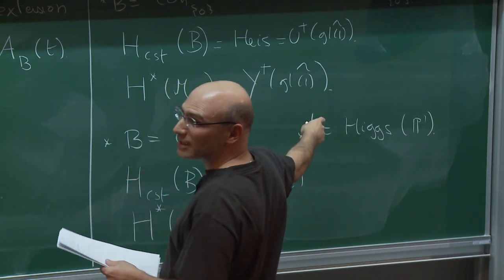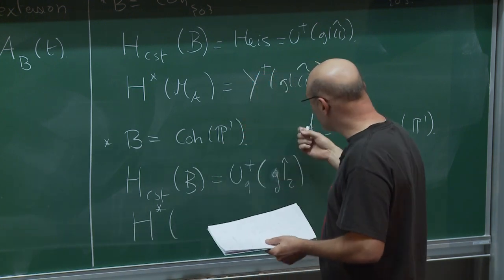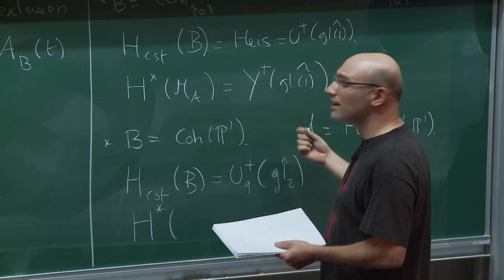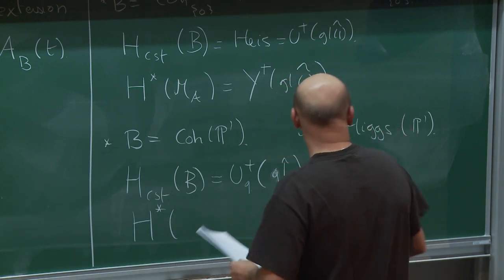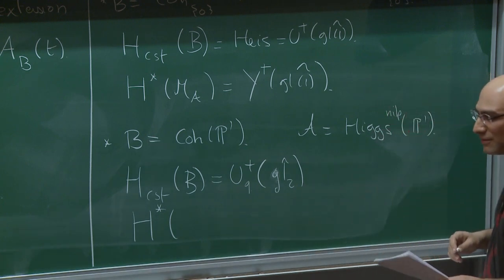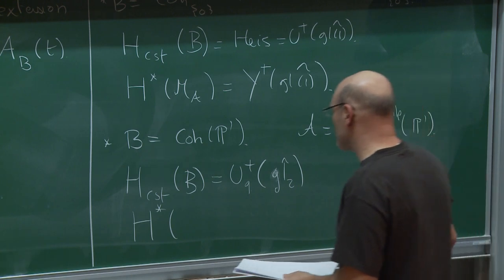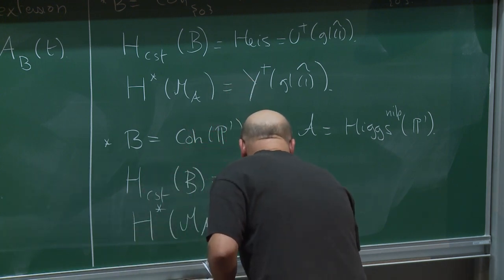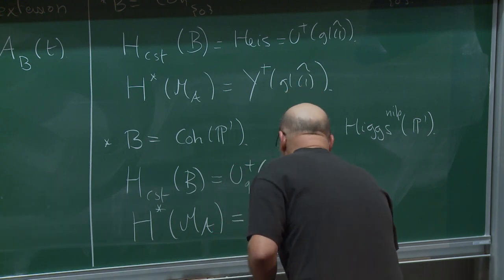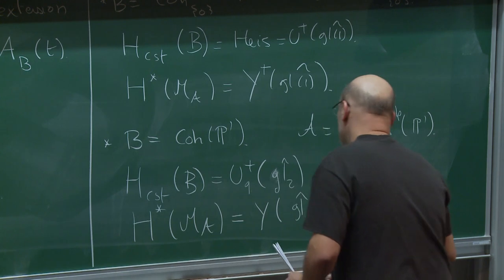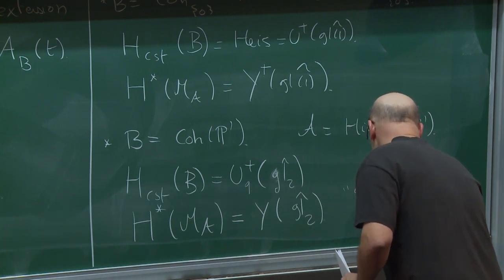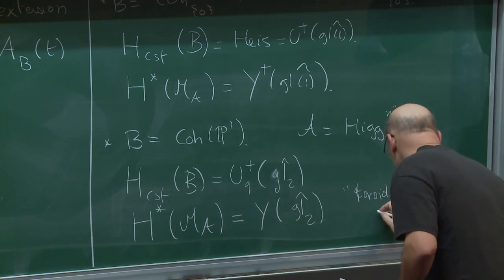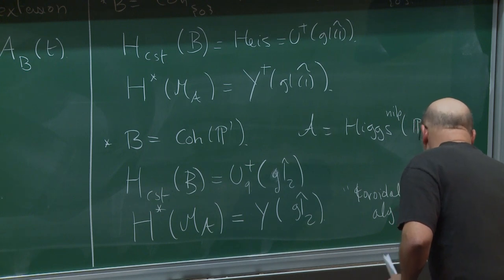The cohomological Hall algebra of the cotangent stack: I claim that essentially you pass from the constructible to the cohomological Hall algebra by first extending the algebra to a Z-graded algebra and then taking the affinization. If you work equivariantly, they are the same more or less, up to some grading shift. And so for M_A in this case, you expect it to be the Yangian of GL₂̂ — something like quantum toroidal, or rather elliptic because this takes into account the central algebra of SL₂.